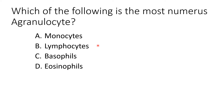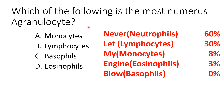Here's an example problem you might come across: which of the following is the most numerous agranulocyte? Remember our mnemonic — 'Never Let My Engine Blow, 603830.' The agranulocytes are lymphocytes and monocytes, since neutrophils, eosinophils, and basophils are the granulocytes. Between lymphocytes and monocytes, our mnemonic tells us lymphocytes are the most numerous — so that is the correct answer.